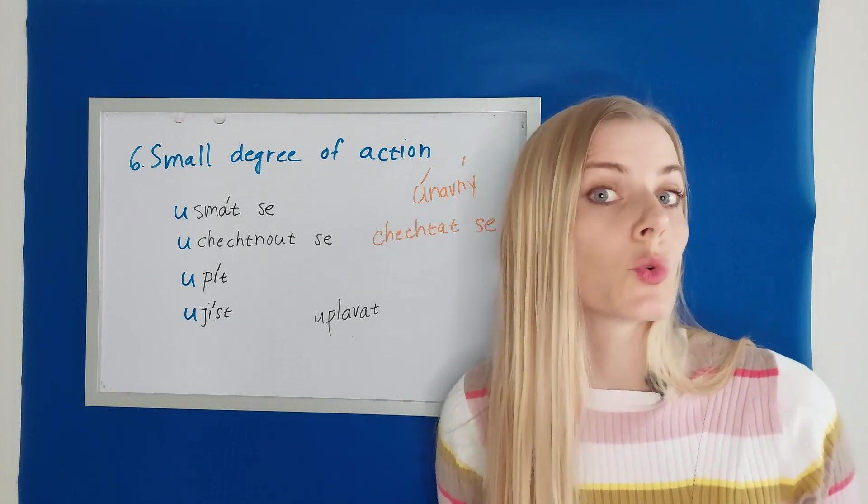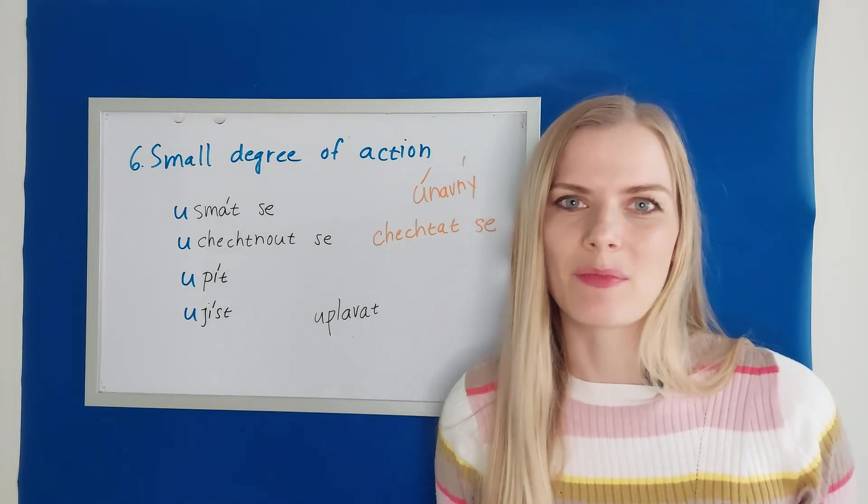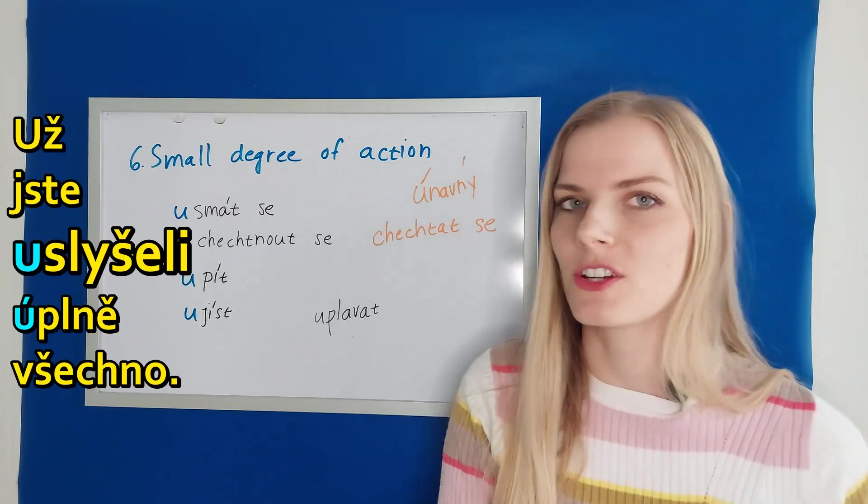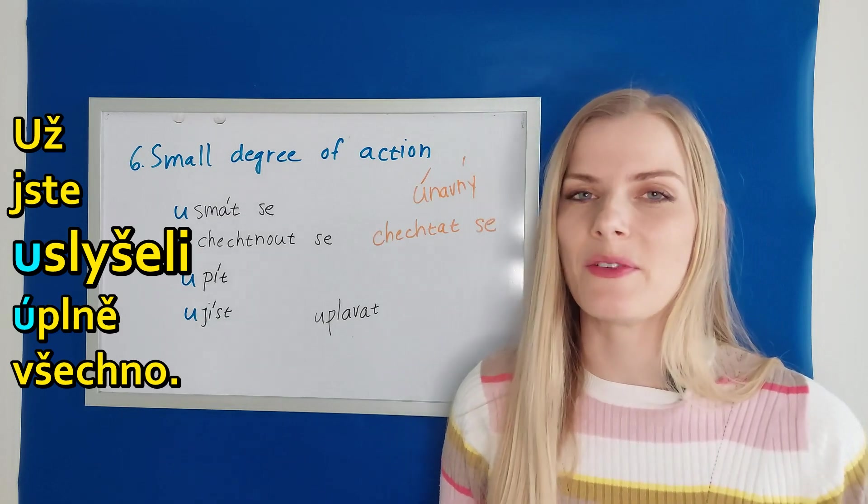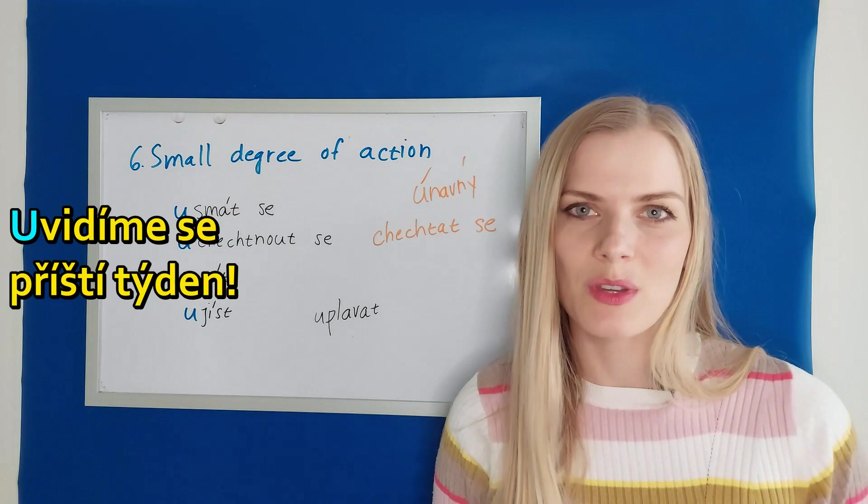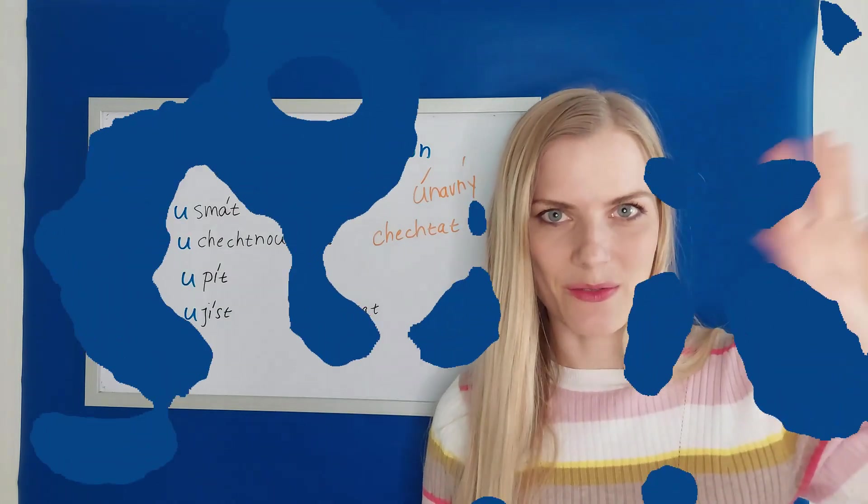Although this video is pretty long, I gave you just a sneak peek of these combinations. Because of course we have a lot more that we could see. So just keep your eyes open. Your ears ready. And when you hear something with u and you know it's a verb, you can think about the possibility of what this means. To je ode mě všechno. Už jste uslyšeli úplně všechno. You'll hear all of it now. A uvidíme se příští týden. And we will see each other next week with another prefix. Krásný den. Čau čau.